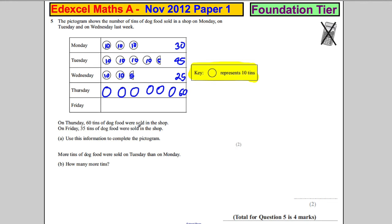And on Friday, 35 tins were sold. So that would be 1, 2, 3, 10s and a half.